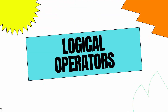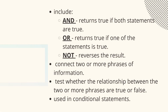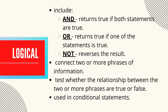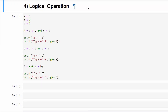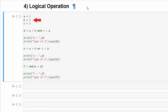Moving on to logical operators — these include and, or, and not. They are used to connect two or more conditions and test whether the relationship is true or false, and are mostly used in conditional statements. 'And' returns true if both statements are true. 'Or' returns true if one of the statements is true. 'Not' reverses the result — it returns false if the result is true. We have three variables: a equals 1, b equals 2, and c equals 3.